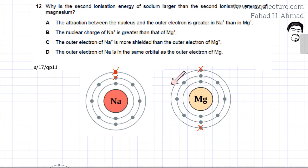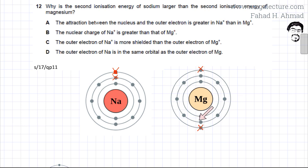The second ionization energy of magnesium would not be very large because magnesium has two electrons in its outermost shell. So when removing the second electron, it would also be removed from the outermost shell.